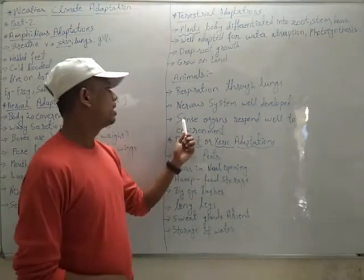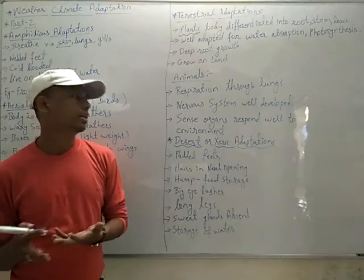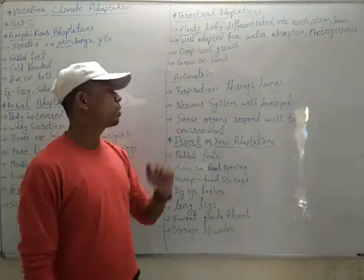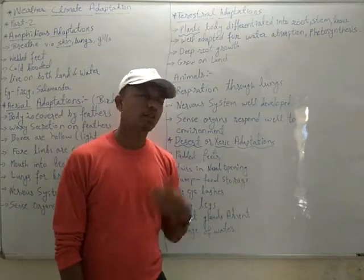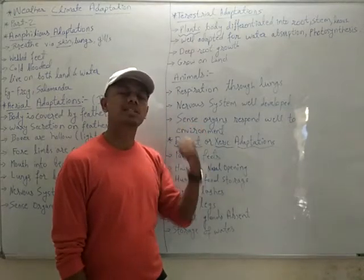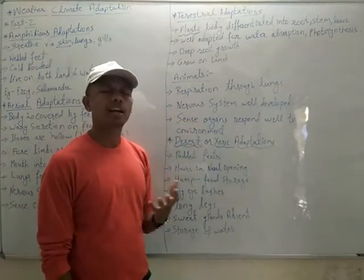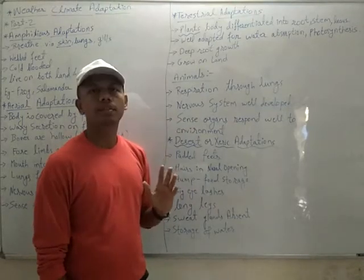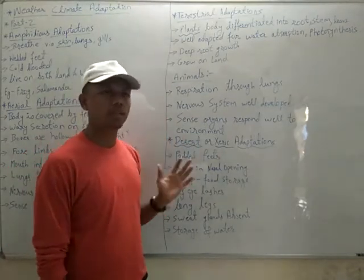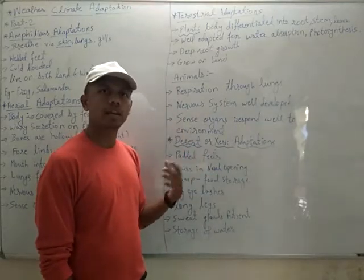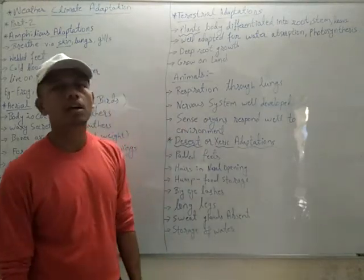Sense organs respond well to the environment. Whatever changes occur in the environment, sense organs respond to them. For the survival of an animal it is very important to possess well-developed sense organs — they help to find food, protect itself, find a proper place to live, and many other functions are dependent on the sense organs.